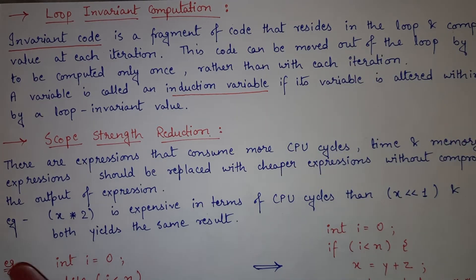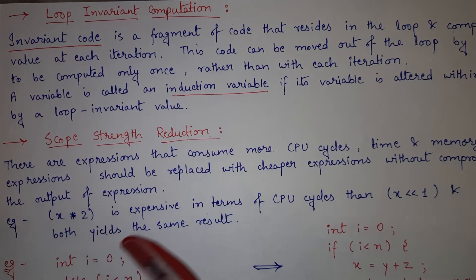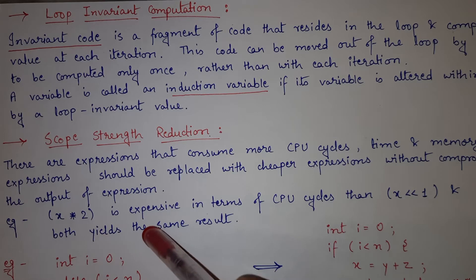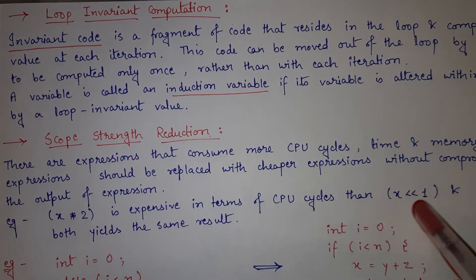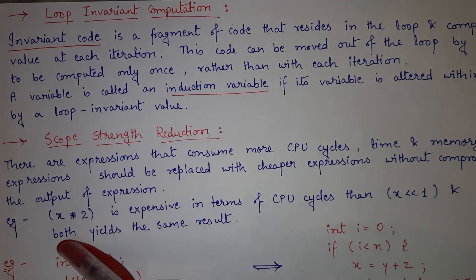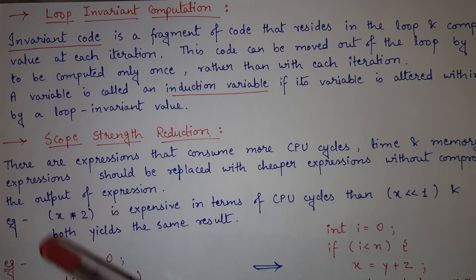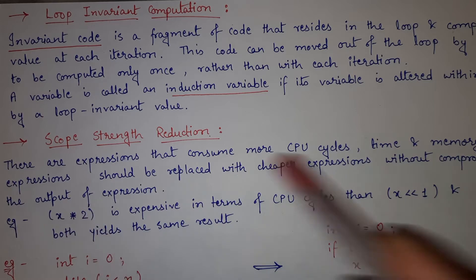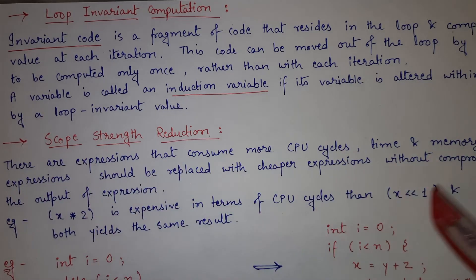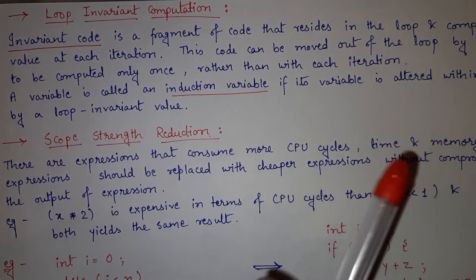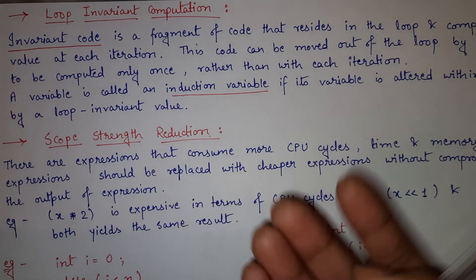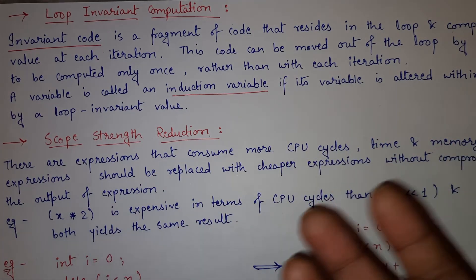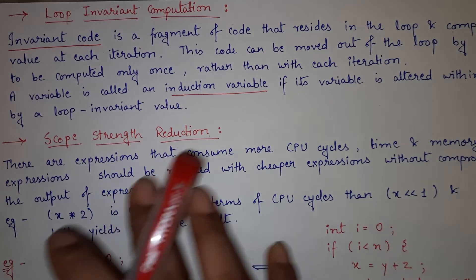Here's an example: x multiplied by 2 is expensive because multiplication and division are expensive expressions. But x left shift 1 yields the same result as x * 2. So whenever you have x * 2 in your code, you can replace it with x left shift 1. Similarly, you can replace division with right shift. In this way, expensive expressions can be replaced with cheaper expressions, and so your code will be optimized. This is how you can do scope strength reduction.